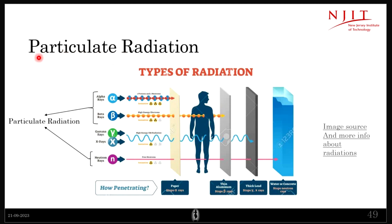As the name suggests, particulate comes from particles. These particles can be two protons and one neutron, that is a helium nucleus, which is known as alpha rays. Or you can have electrons — a beam of electrons is also a type of radiation which we call beta rays, and that comes under the category of particulate radiation. And then there are neutron rays.